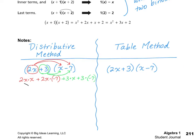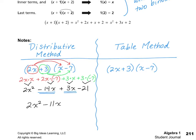Now, to simplify this: 2x multiplied by x gives us 2x squared. Then 2x multiplied by negative 7 is negative 14x. 3 times x is 3x, and 3 times negative 7 is negative 21. The last step is just to combine like terms. I notice that I have two terms that can be combined, so I'm going to get 2x squared minus 11x minus 21. Notice that I have my answer already written in standard form.